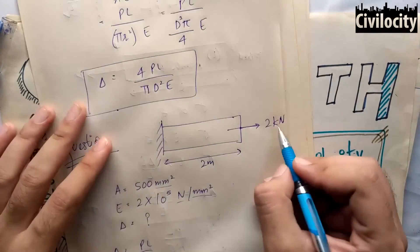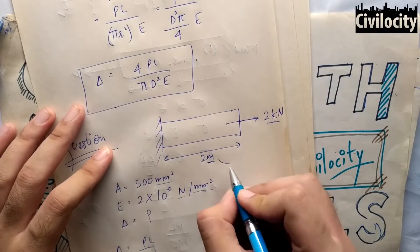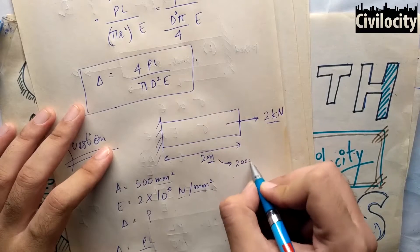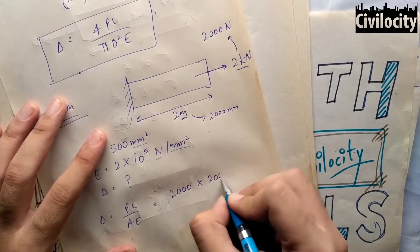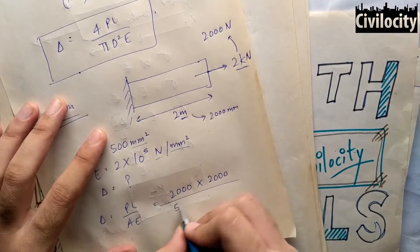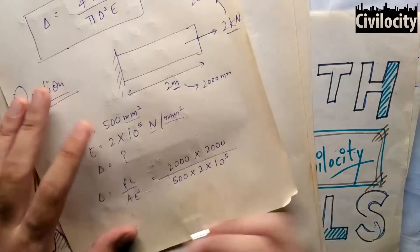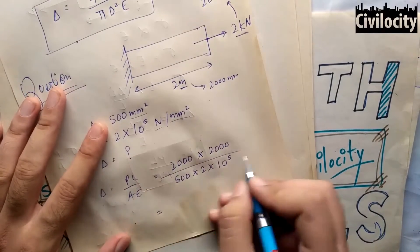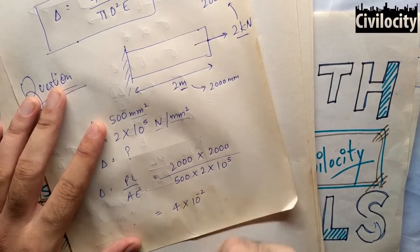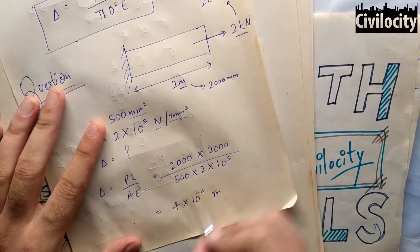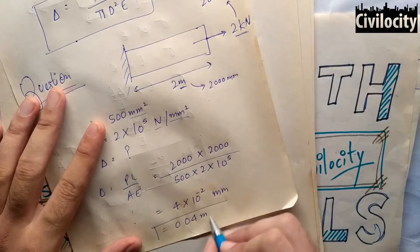Before calculating anything, make sure that all units are compatible — everything in Newton and millimeters. Convert kilonewton to Newton and meters to millimeters. So deflection equals 2,000 Newton into 2,000 millimeters divided by 500 mm² into 2 into 10 raised to the power 5 Newton per mm². On calculating, we get 4 into 10 raised to the power minus 2, that is 0.04 millimeters. So the deflection caused by the 2 kN load in this bar is 0.04 millimeters.